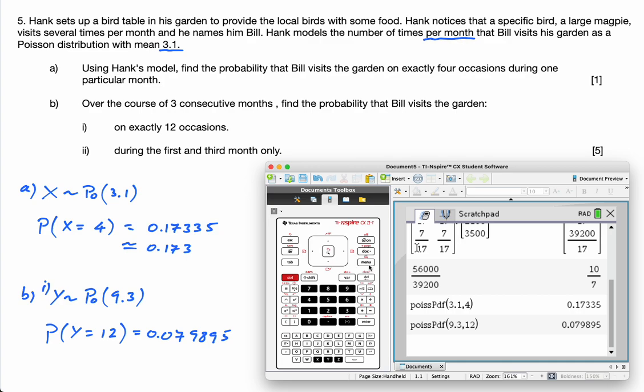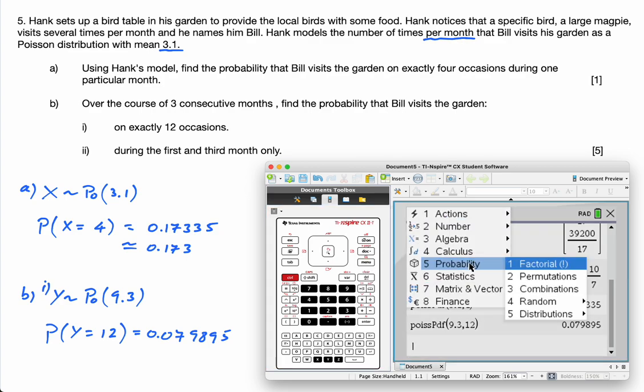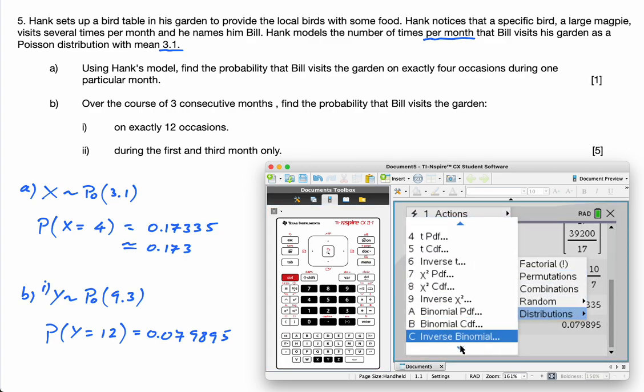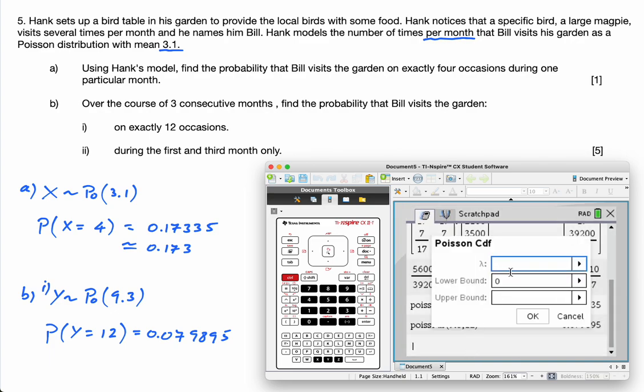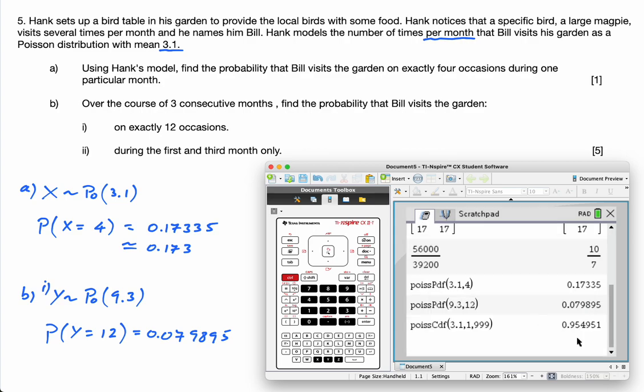So I need to work out these separately. Distributions. Now I'm going to do Poisson CDF. I'm going to do 3.1, a lower bound of 1 and an upper bound of 999. That'll be enough. Press OK. And I get 0.954951.